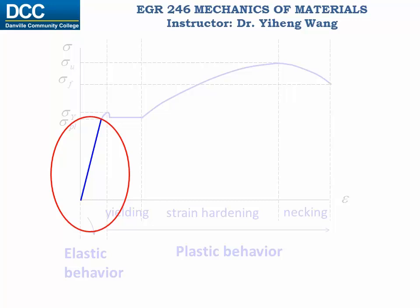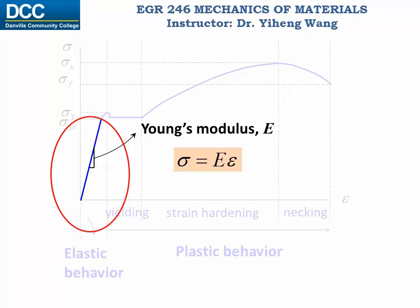The proportional region of the diagram is of special interest. It shows that the deformation of the material has a linear relation with the normal stress. The slope of this line is known as Young's modulus E, which is an important and inherent parameter for material mechanical properties, similar to density. It can also be called the modulus of elasticity. This linear relation can be written as sigma equals E times epsilon, which is known as Hooke's Law.